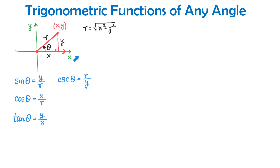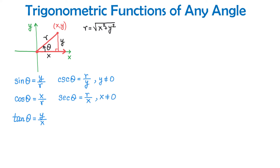If this point were located on the x-axis, the y coordinate would be 0 and division by 0 would be undefined. Therefore, cosecant of theta is R over y, where y is not equal to 0. Secant is the reciprocal of cosine: if cosine is x over R, then secant is R over x, and x cannot be equal to 0 — if the point were on the y-axis, secant would be undefined. Cotangent is the reciprocal of tangent: if tangent is y over x, then cotangent is x over y, and y cannot be equal to 0. Also, for tangent, x cannot be equal to 0.